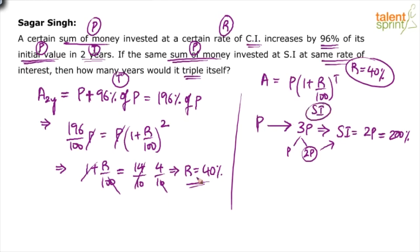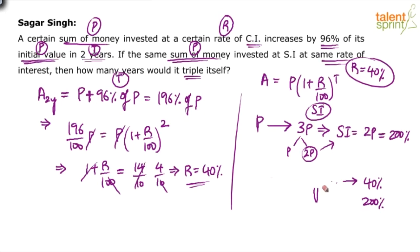In case of simple interest, the rate is 40%, so each year you get 40%. How much is needed? 200%. Each year you get 40%, so to get 200%, you need 5 years. So the simple interest would triple itself in 5 years.